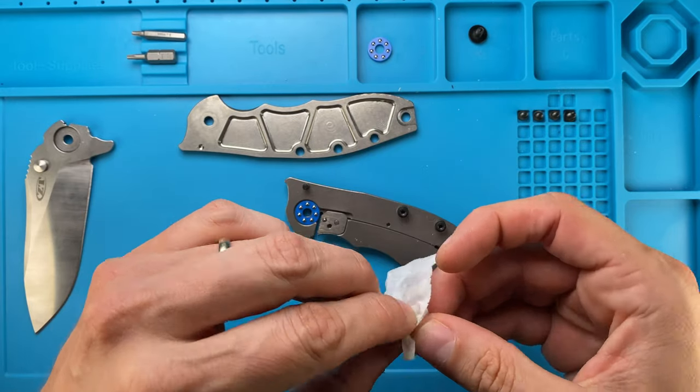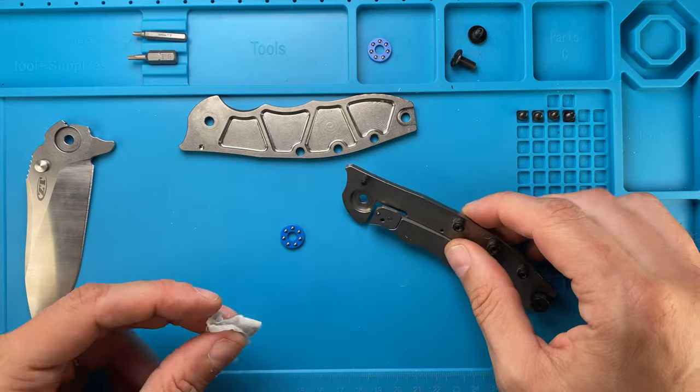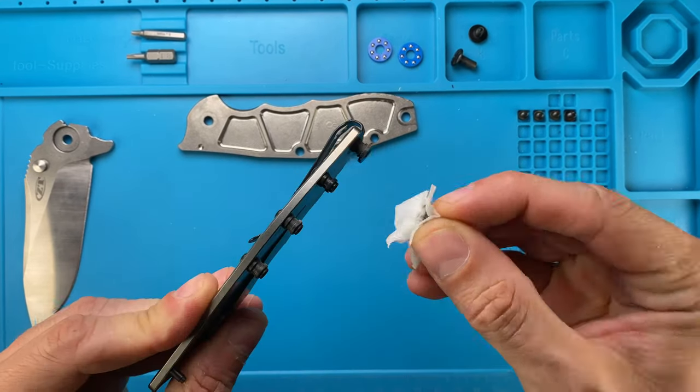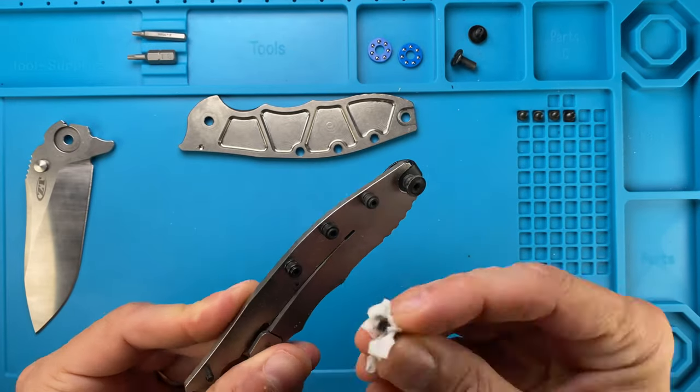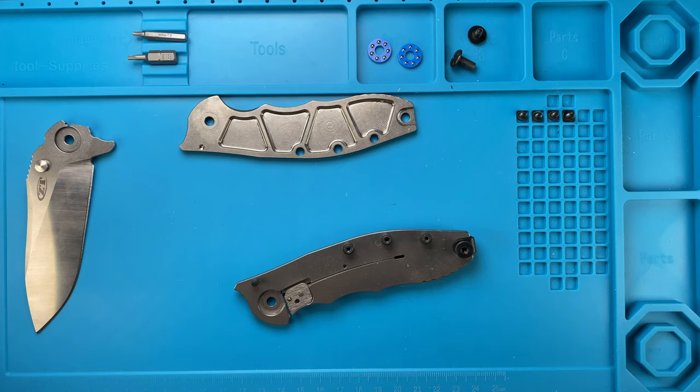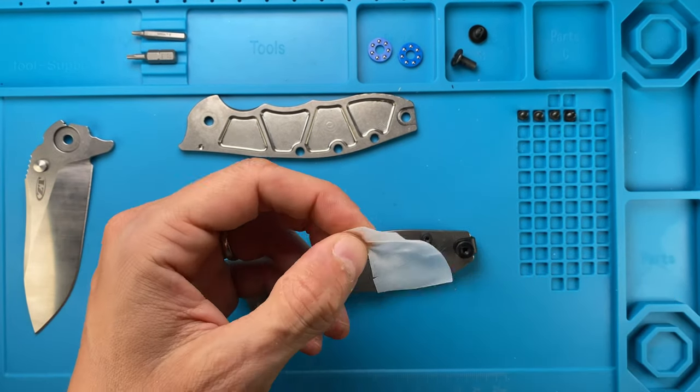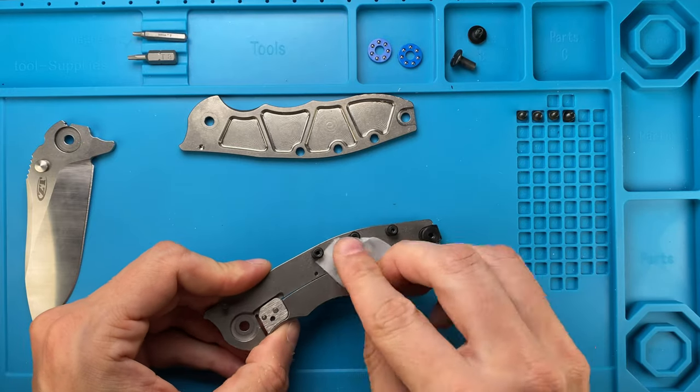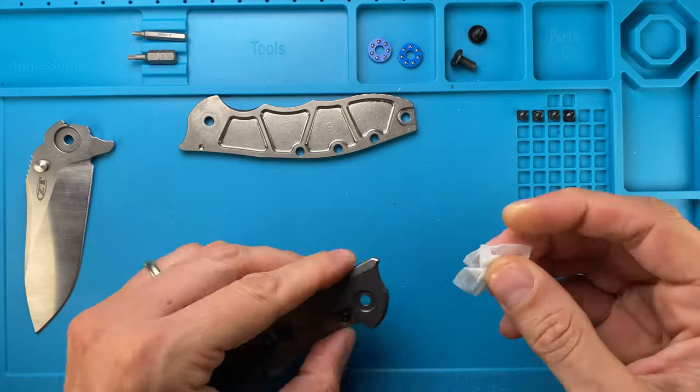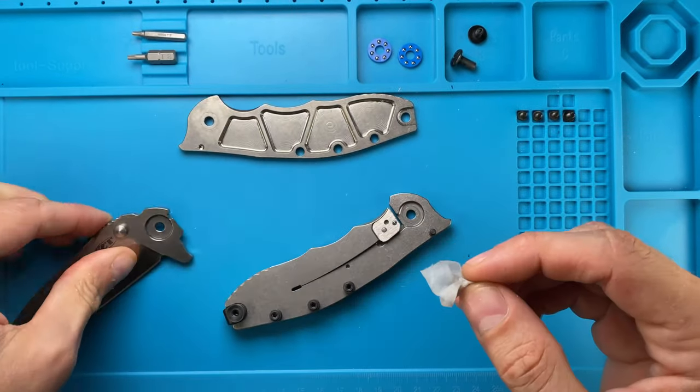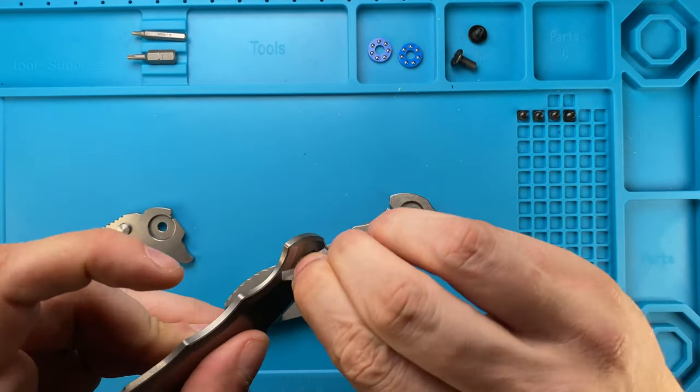Just clean this up a little bit. There's not really a need to remove the standoffs because we just want to perfect the action and give it a clean up, mainly around the pivot, which I'm suspecting is where we can improve this already nice action. You can also clean on the outside, clean out the stop pin, tang of the blade, and also the other side.